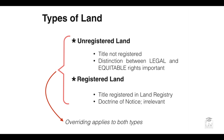In subsequent lessons we will consider unregistered and registered land in depth, but for this introduction here is a quick outline. Unregistered land, as the name suggests, has its title not registered in the land registry. The distinction between legal and equitable rights is very important in this context. Most unregistered land has now been registered through certain procedures. Registered land has its title duly registered, and the doctrine of notice — highly important in unregistered land — is almost deemed irrelevant in that context.